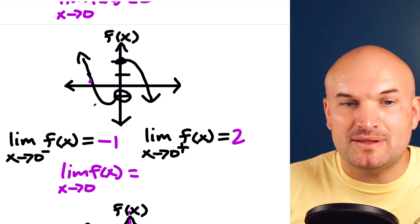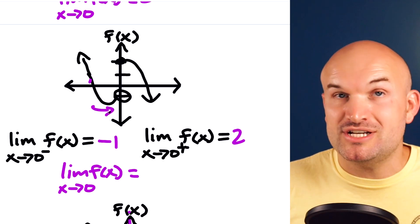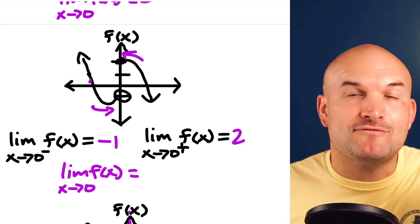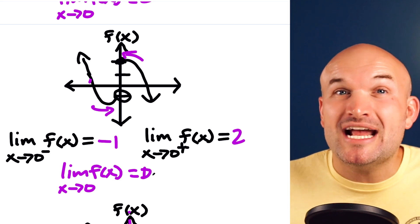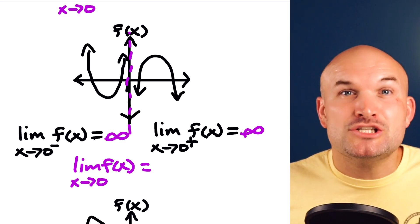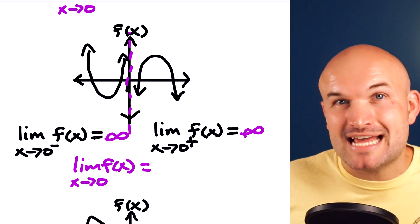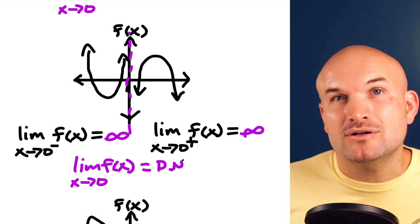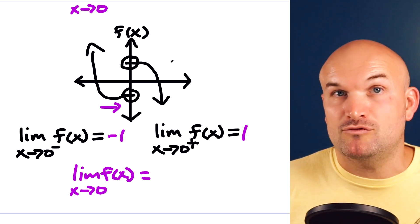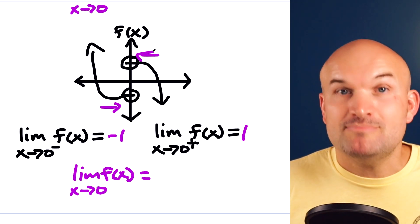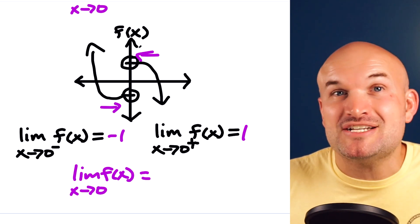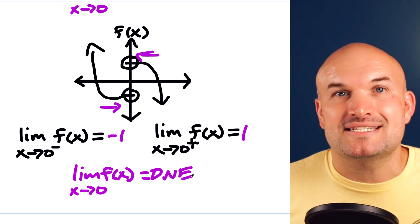Now we have something different. From the left we're approaching negative one; from the right we're approaching two. Since the limit is not the same for left and right, our general limit does not exist. In the next example, left and right hand limits again do not agree, so the general limit does not exist. And once more: the left hand limit is approaching negative one, the right hand limit is approaching positive one — since they don't match up, this limit does not exist.